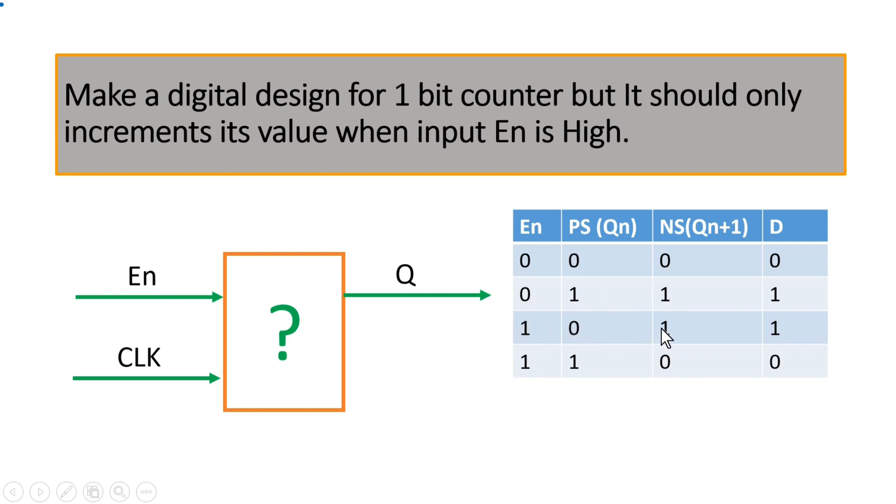We know the next state should be one. It should be inverted, then only it will act as a 1-bit counter. So when enable is one, output of this flip-flop is one, that means Q is one, the next state will be zero. Now if I tell you that I want this as a next state, what should I apply at the input of our D flip-flop?